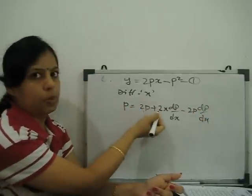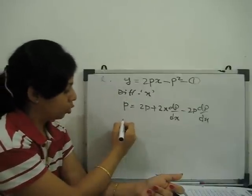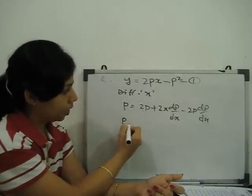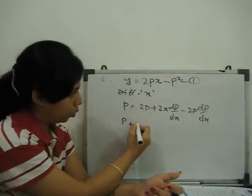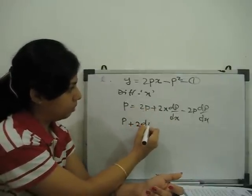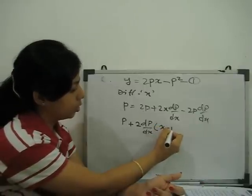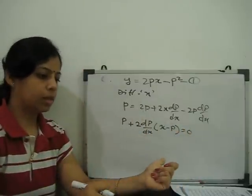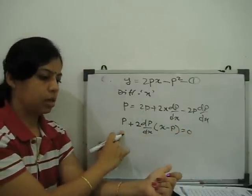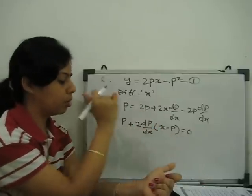Now this is 2p, this p comes here, 2p minus p is equal to 1p. So, 1p plus if 2 take outside dp by dx is taking outside, then this is x minus p is equal to 0. So, our equation becomes p plus 2 dp by dx into x minus p equal to 0.